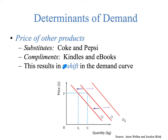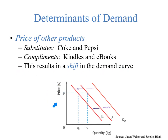For complements, the best example is Kindles and e-books. As the price of Kindles goes down, more people will buy Kindles, and the demand for e-books will go up — if people have Kindles, they're going to buy more books. Conversely, if Amazon were to jack up its prices on Kindles, the demand for e-books would go down. So the price of other products depends on the relationship between the two products — substitutes, complements, or unrelated — and this results in a shift of the demand curve.